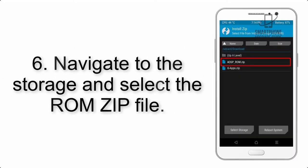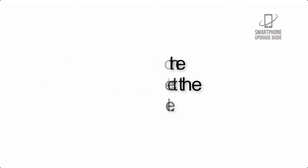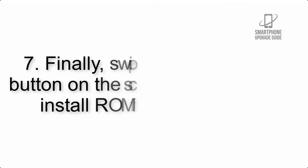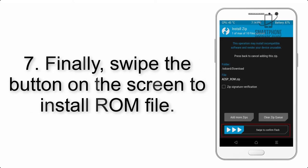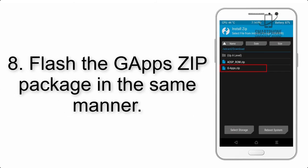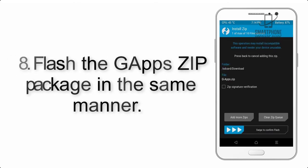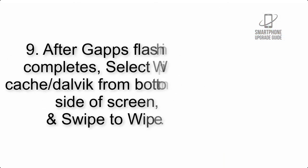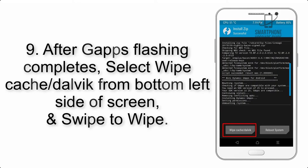Step 5: Go back to the recovery main screen and tap on the Install button. Step 6: Navigate to the storage and select the ROM zip file. Step 7: Finally, swipe the button on the screen to install the ROM file.